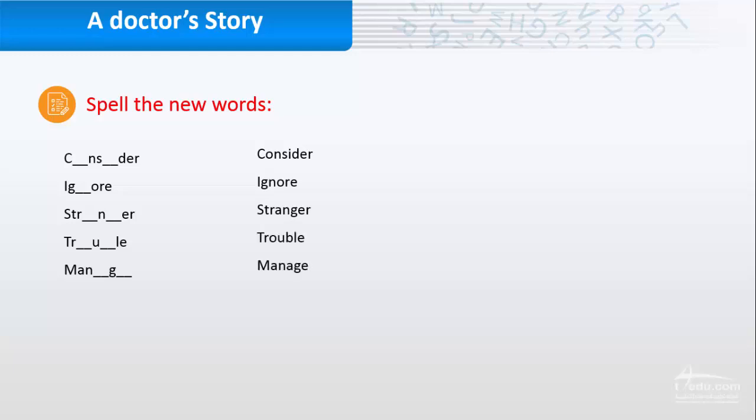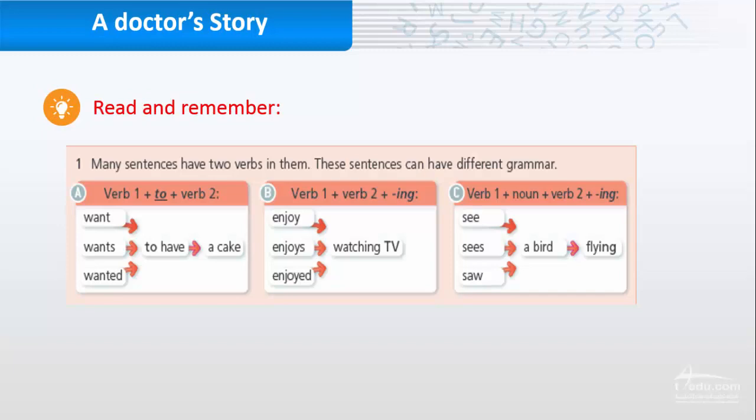Now I want you to remember these. Many sentences have two verbs in them. These sentences can have different grammar. For example, verb one, then the word to, then verb two. Want, wants, wanted, then to have a cake. So if you are having verb one then verb two, always verb two is the basic form of the verb. You don't add anything to it here because it's coming after to. But verb one, it's okay, you can add S or ED according to the tense of the sentence. But verb two is the basic form always.